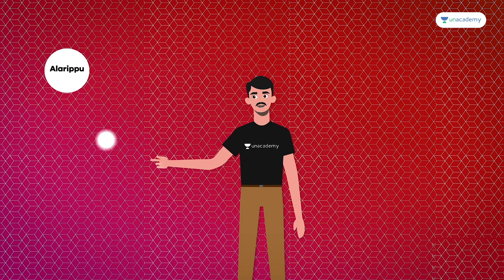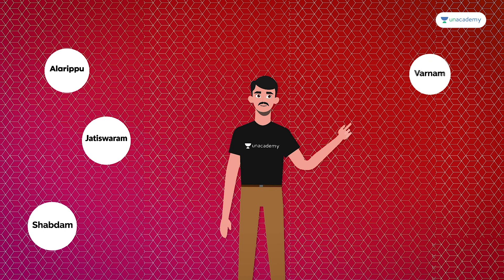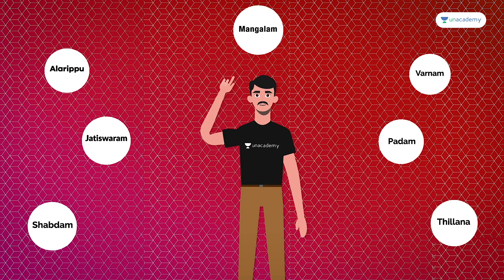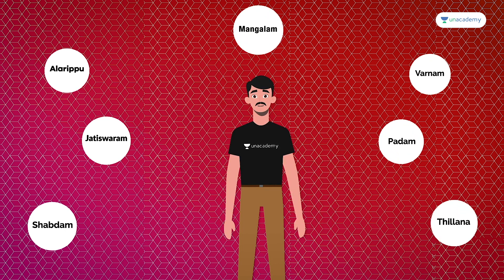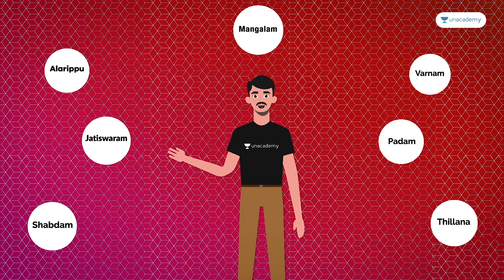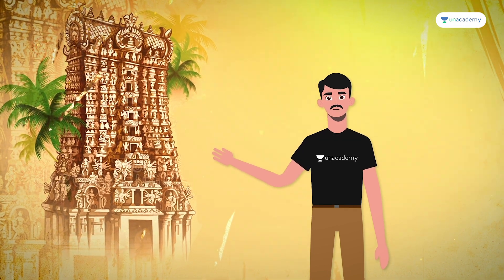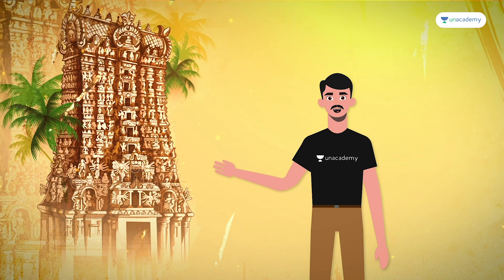The 7 parts are: Allarippu, Jatiswaram, Shabdam, Varnam, Padam, Thillana and Mangalam. A single dance form can have these many parts to captivate the minds of people. Bharatanatyam poses are depicted on the Gopurams of the Chidambaram temple.